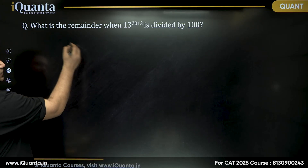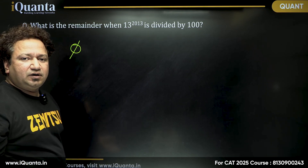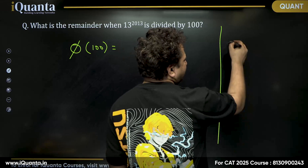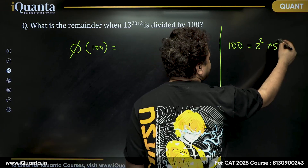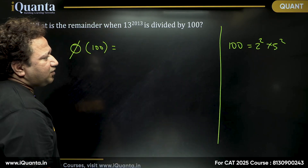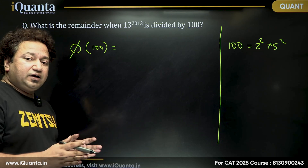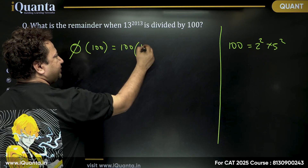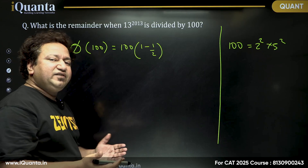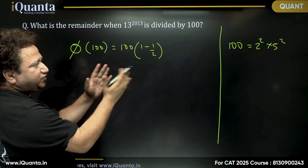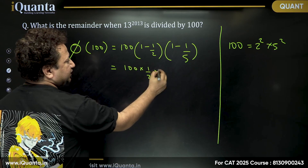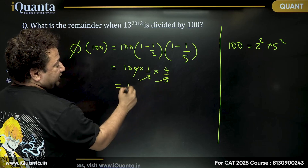I'll use Euler's theorem. First, let me calculate the number of co-primes to 100 that are less than it, using Euler's function. φ(100): first I need to factorize 100 — it is 2² × 5². To find the co-prime numbers to 100, I multiply 100 × (1 − 1/2) × (1 − 1/5), which gives 100 × 1/2 × 4/5 = 40. So there are 40 co-primes to 100 that are less than it.